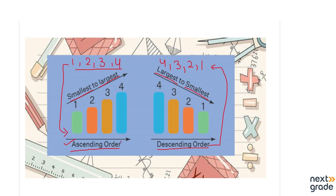These are the two terms used for ordering numbers. We are going to do some examples in which we will place different numbers in a place value chart and then order them according to the question's requirement. So let's move to the next slide.